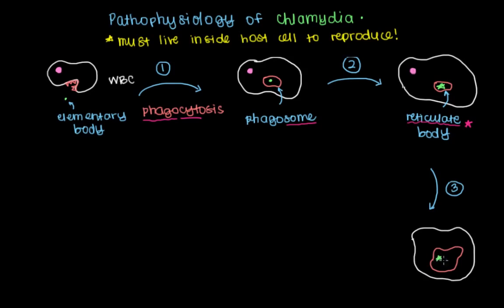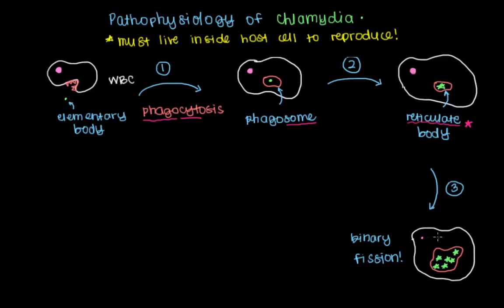The phagosome — drawn purposely larger here — will contain many reticulate bodies, because these start using the proteins and machinery of the cell to reproduce via binary fission, meaning it just splits in half, giving you two smaller versions. While all this is happening, nutrients the cell should have used to fortify its membrane are being directed toward the chlamydia, so the cell is not doing well — the nucleus is drawn very small to indicate it's struggling.